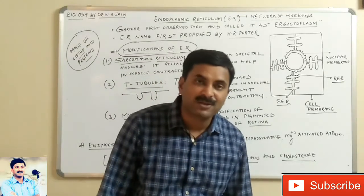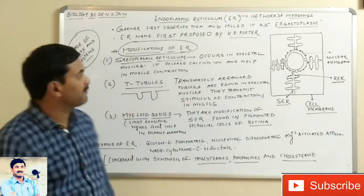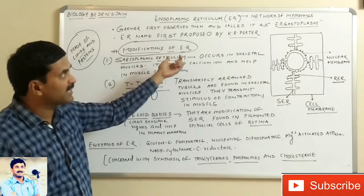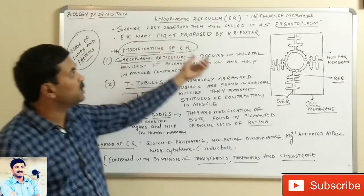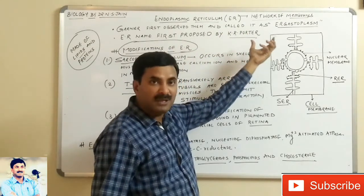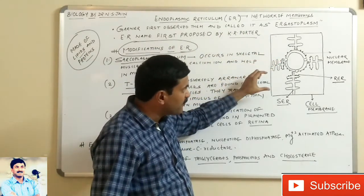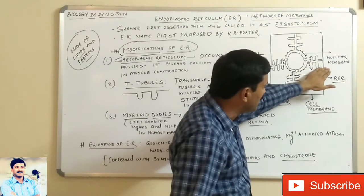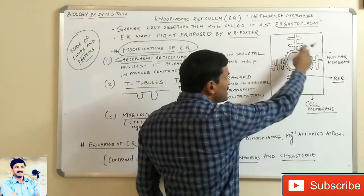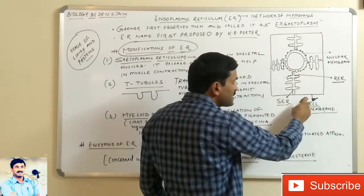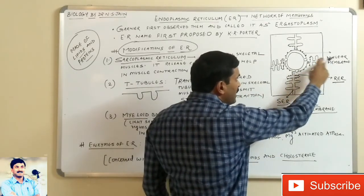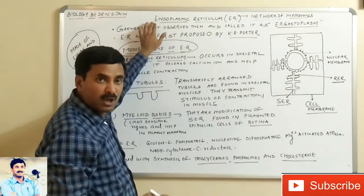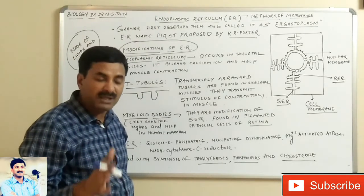Welcome students to my channel Biology by Dr. NSN. Today we are covering a new topic known as the endoplasmic reticulum, which is a feature of the eukaryotic cell. The endoplasmic reticulum is a network of membranes present in a cell from the cell membrane to the nuclear membrane. This membranous system spread all along the cell is called the endoplasmic reticulum.